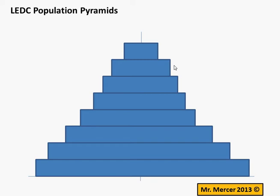Now, in a question of this nature, you'll be asked to describe the graph and to explain your observations. But first of all, let's just make sure you understand what a Population Pyramid is. What you've got are the different bars of the graph, separating male and female to either side of the graph.